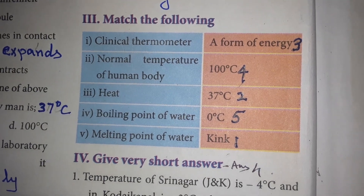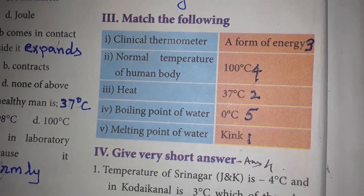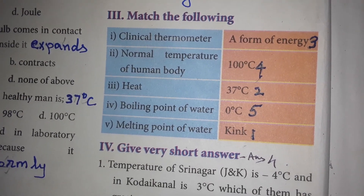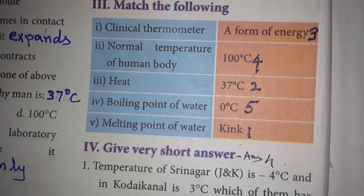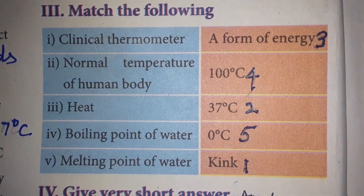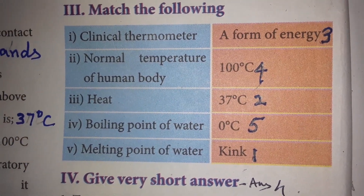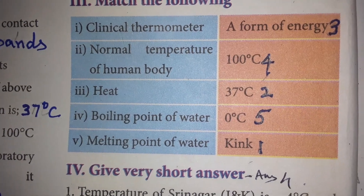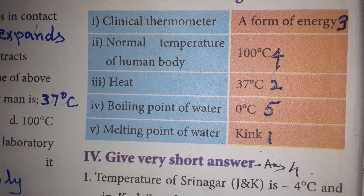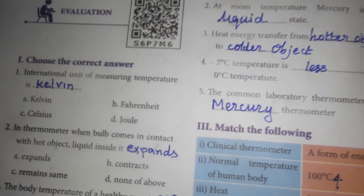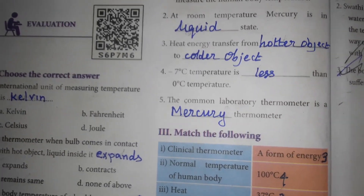Next one is Match the Following. A clinical thermometer has a kink, a bulb containing mercury, and a kink. The normal temperature of the human body is 37 degrees centigrade. Heat is a form of energy. The boiling point of water is 100 degrees centigrade and the melting point of water is 0 degrees centigrade. This completes the book back exercise one-mark questions.